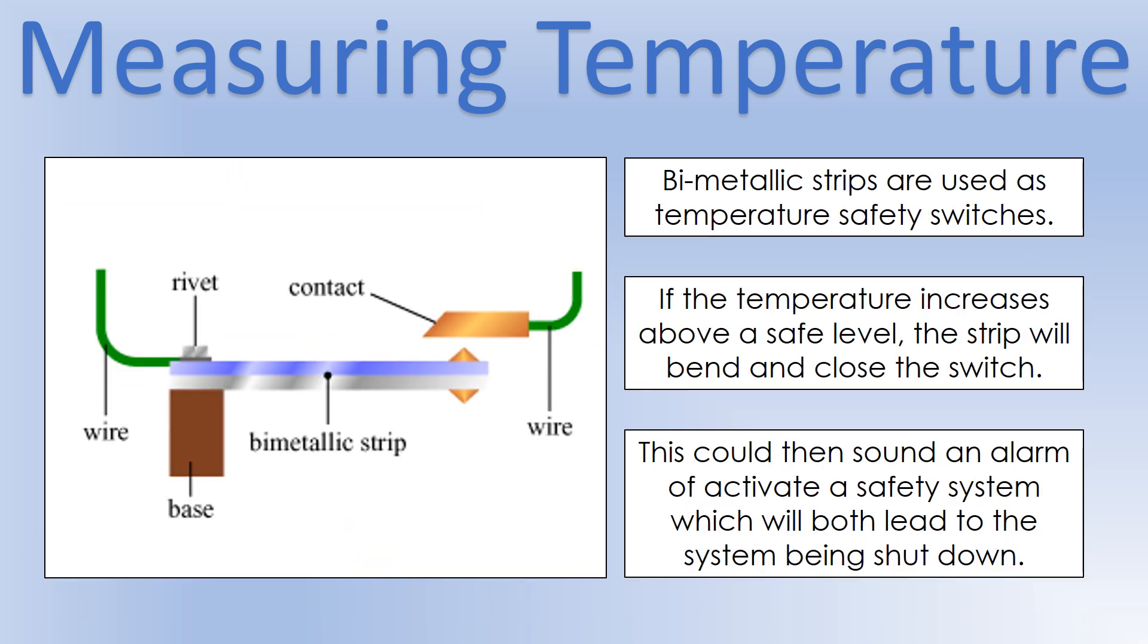So one thing we can use them for is a temperature sensitive switch. So with this strip that you can see here, if the temperature rises in our circuit, which could potentially be dangerous, the bimetallic strip will bend and then the connection you can see on the bimetallic strip will become in contact with what's labelled as the contact. And if you do that, you'll complete a circuit, which could be used to activate an alarm. It could activate an automatic shutdown system. Once you've completed the circuit, that's what tells something to happen. So it's a safety based device.